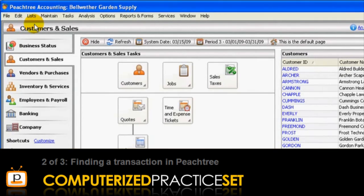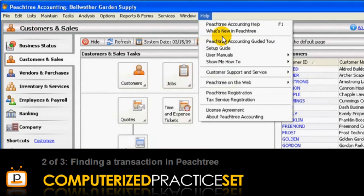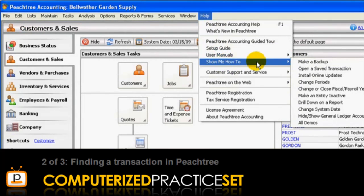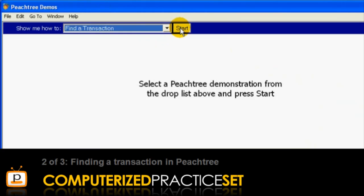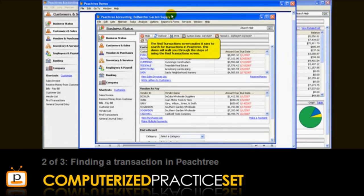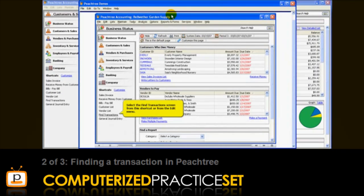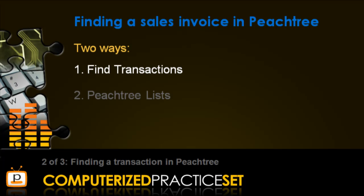To view this video, go to the Help menu, click Show Me How To, and choose All Demos. In the Peachtree Demos window, select Find a Transaction, then click Start. You can see the demo video playing here. As an alternate approach to the Find Transactions window, we can use the Peachtree lists, and this is the approach that we will now illustrate for the rest of the video.